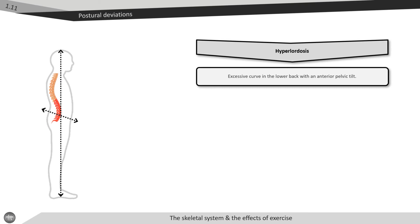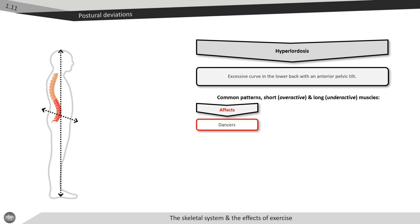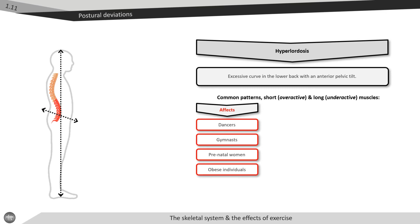The final common postural deviation we will look at is known as hyperlordosis or lower cross syndrome. This is a postural deviation indicative of an excessive curve in the lower back with an anterior pelvic tilt. Hyperlordosis typically affects dancers, gymnasts, prenatal women, and obese individuals.